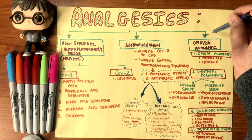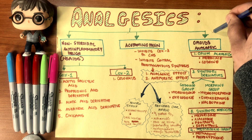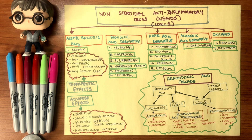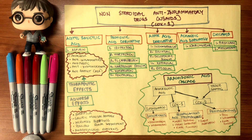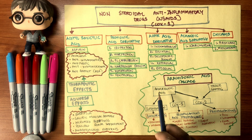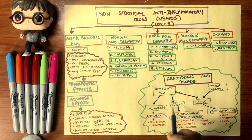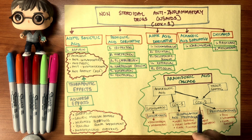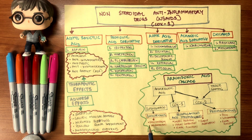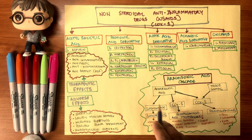Before diving into detail, let me explain what cyclooxygenase has to do with pain. We need to understand the arachidonic acid cascade — the process through which prostaglandins are synthesized. Upon tissue damage, COX-2 is stimulated. From arachidonic acid, lipoxygenase, COX-1, and COX-2 can be stimulated. When lipoxygenase is activated, leukotrienes are produced, which are responsible for bronchospasms and inflammation — this is when anaphylactoid reactions occur, which some drugs produce as side effects.